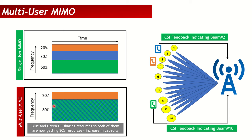With more UEs and more beams, cell capacity can increase further. Why weren't blue and orange paired? Because they are too close to each other — their beams overlap and would cause interference, potentially reducing throughput rather than improving it. For MU-MIMO pairing to work, UEs need sufficient beam separation to avoid interfering with each other.